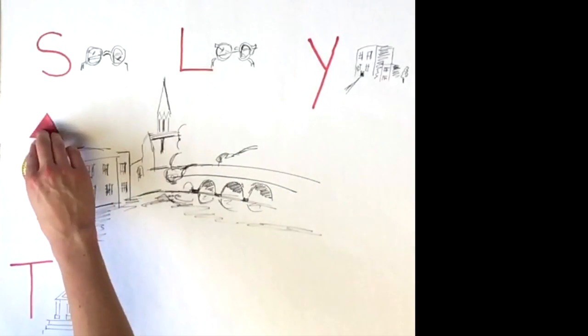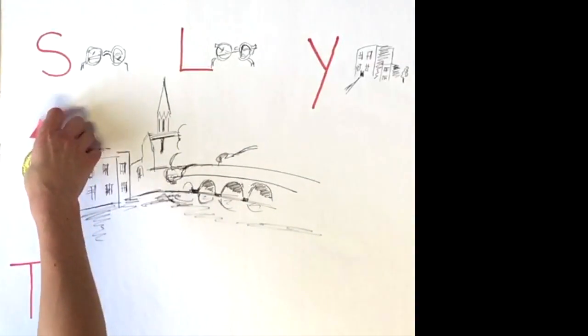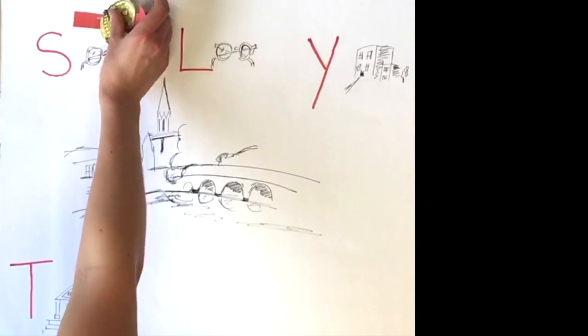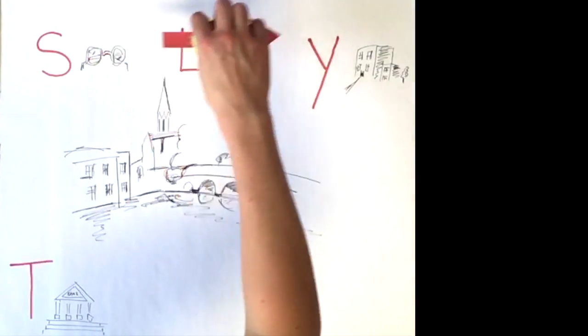When the money was in fact paid over by Twinsectra to Simms, he paid it, in turn, to Leach, but without ensuring that the undertaking was complied with. Leach paid it, in turn, directly over to Yardley, who used it for purposes other than the acquisition of real estate.